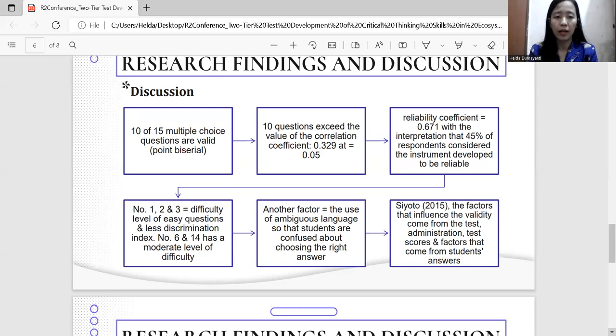Number one, two, and three have difficulty level of easy and less discrimination index. Number six and 14 have a moderate level of difficulty.